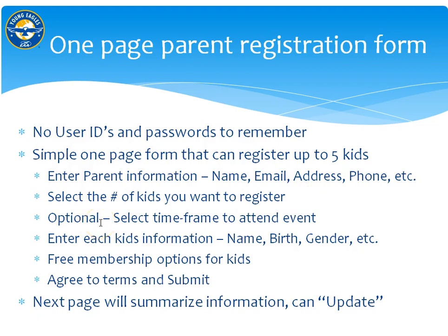Optionally, there might be a time frame selected for the event, with up to one to four different time frames, and each time frame may be available or full. Then for each kid you enter the name, birthday, gender, etc. There are free membership options for the kids which you can select or not. You agree to the terms and hit submit and you're done. The parent will then get an email with the information about the event.